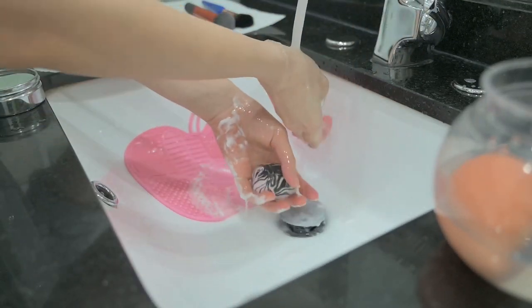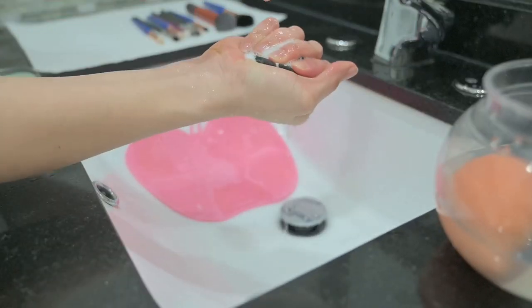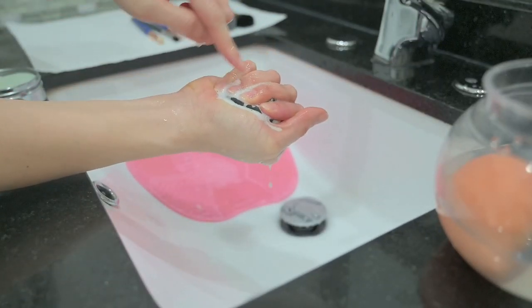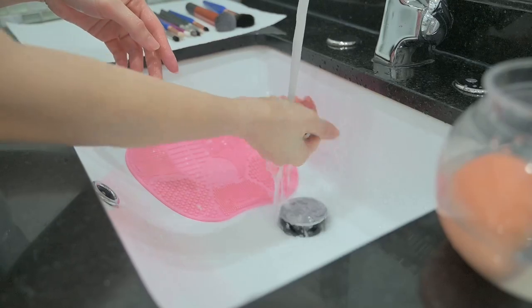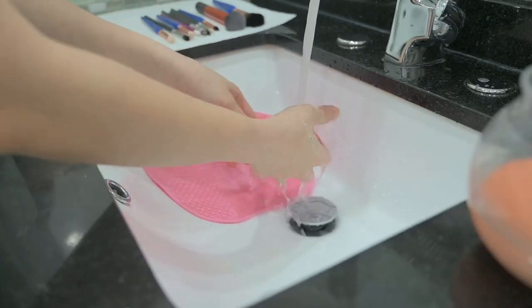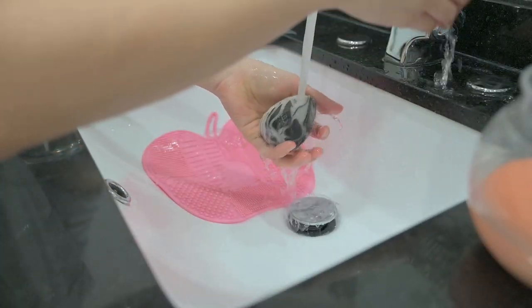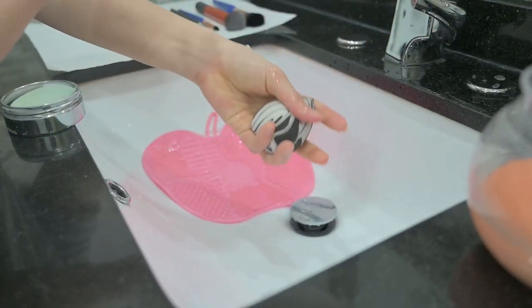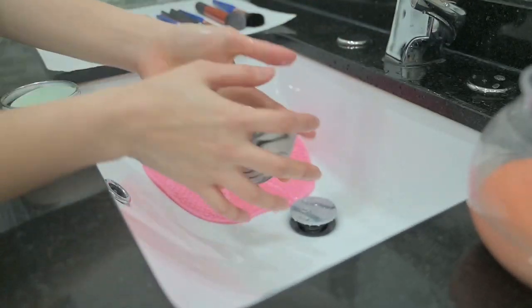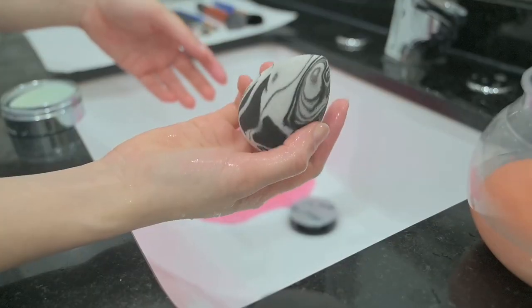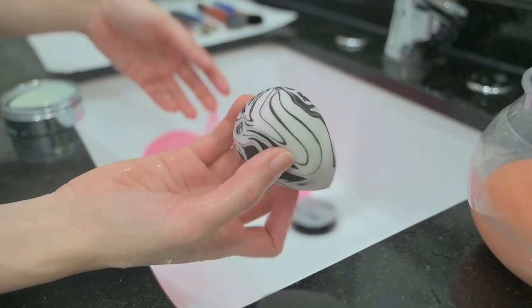So I squeeze it and see if there are any suds in there and rinse it again until I get all of that residue out. I always clean my sponges right after using them as they are porous and can absorb and trap moisture which can create an ideal environment for mold and bacteria to grow.